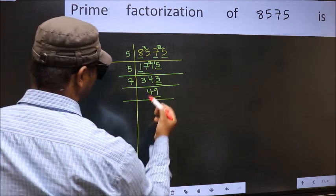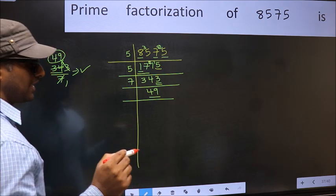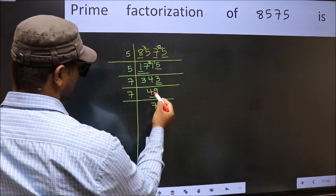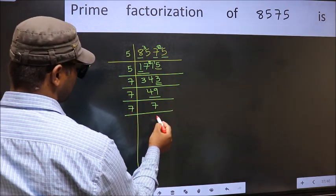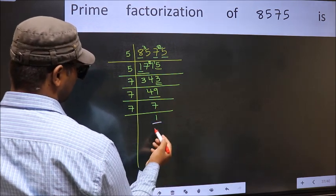Now we have 49. Always remember, 7 into 7, 49. That is, 7 times 7 is 49. Now we have 7, 7 is a prime number, so 7 once. So we got 1 here.